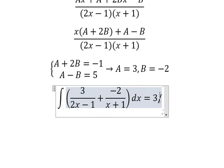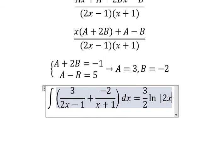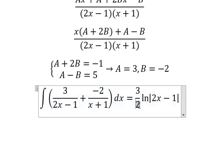That should be 3 over 2 ln of the absolute value of 2x minus 1. The number 2 in here is the coefficient of 2x, that's why we have number 2 after we do this integration.